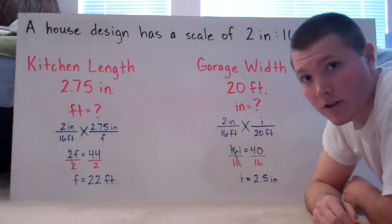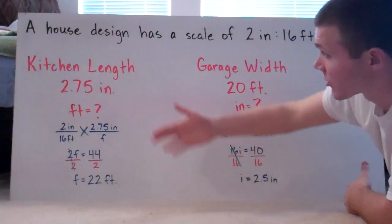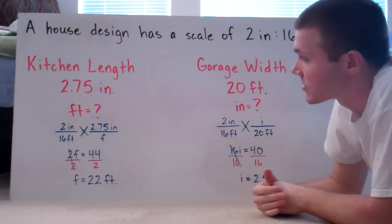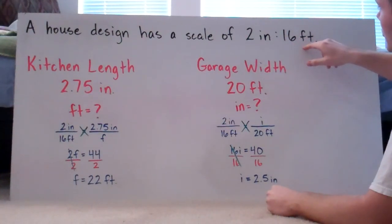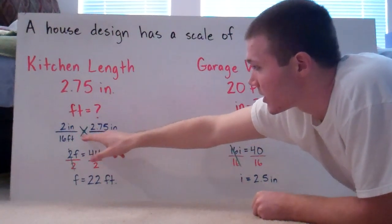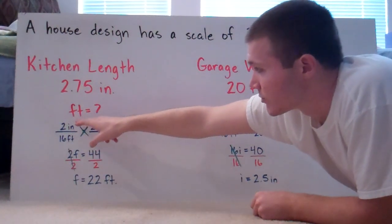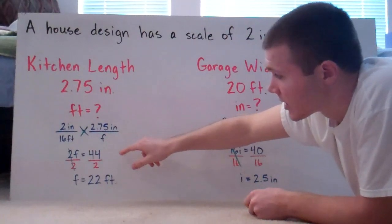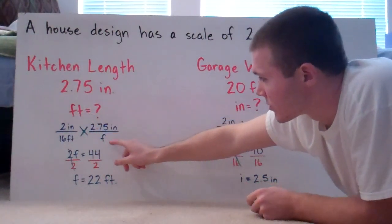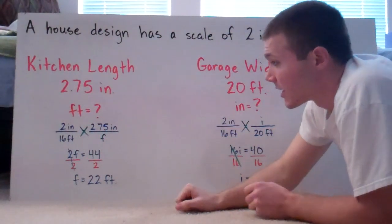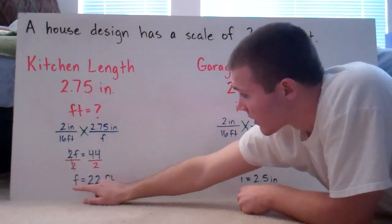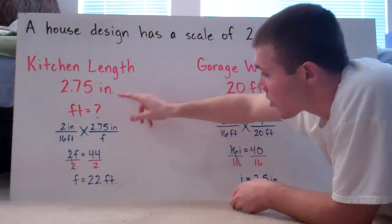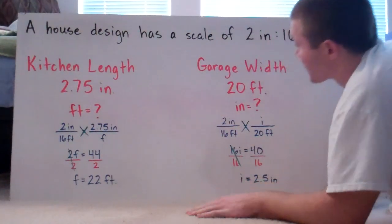Let's say the kitchen length on the drawing is 2.75 inches. If you're building that kitchen, you want it to match the drawing at actual size. Our ratio is two inches over 16 feet, set equal to 2.75 inches over f (feet). Cross multiplying: 2 times f is 2f, and 16 times 2.75 is 44. Dividing both sides by two, f equals 22 feet — so the kitchen is supposed to be 22 feet long.